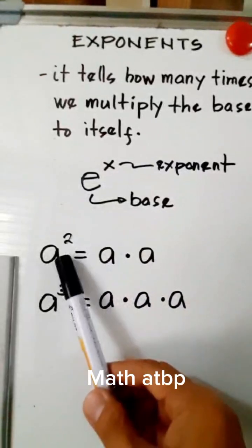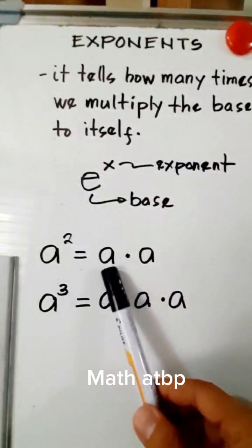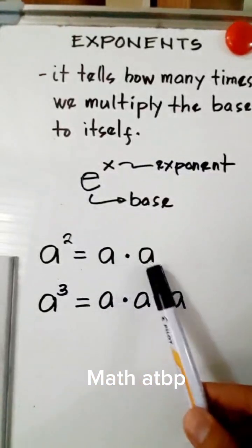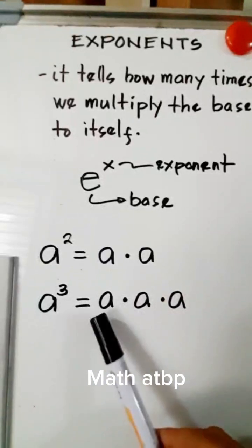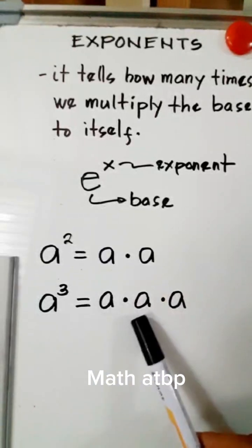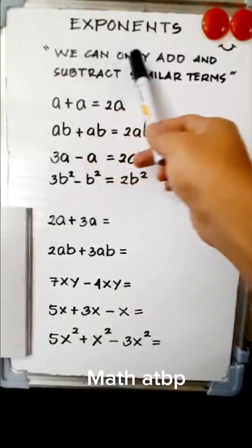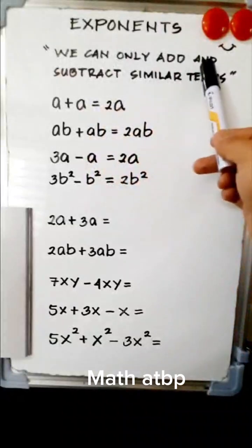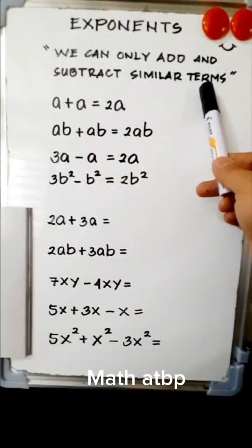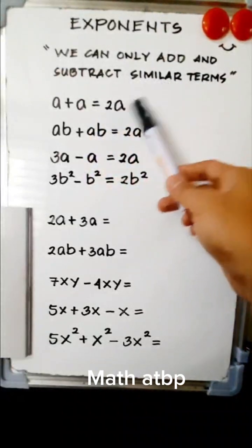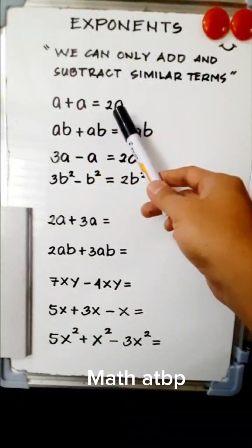If we have a squared, that is simply equal to a times a. And a cubed is equal to a times a times a. We can only add and subtract similar terms, meaning the powers of the variables are the same.